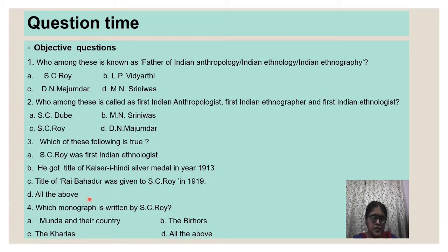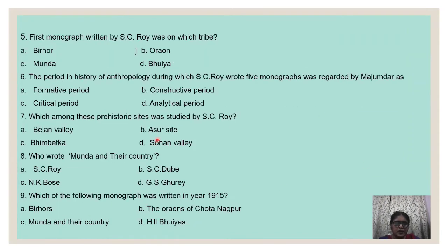Fourth question: which monograph is written by S.C. Roy? Options: Munda and Their Country, The Birhors, The Kharias. The correct answer is all three, because all these monographs were written by him. Fifth question: the first monograph written by S.C. Roy was on which tribe? The correct answer is C — Munda. Sixth question: the period in history of anthropology during which S.C. Roy wrote five monographs was regarded by Majumdar as the constructive period — correct answer is B.